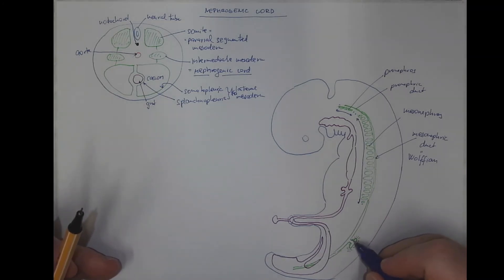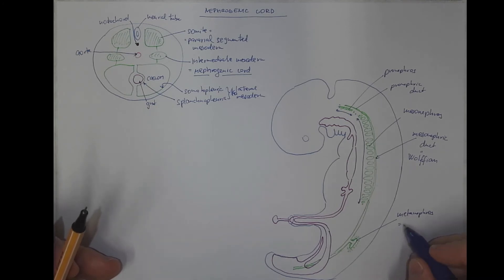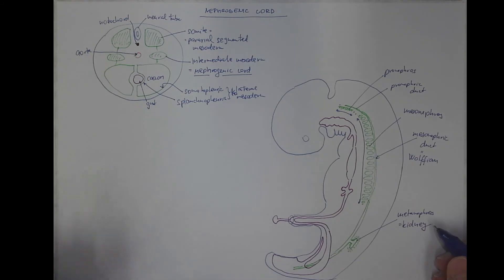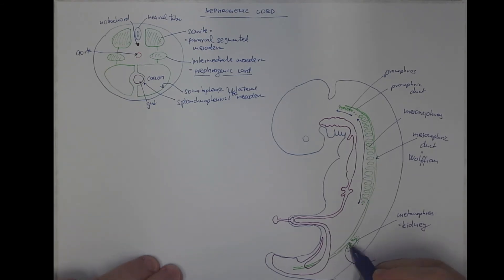And this will be the metanephros, also known as the final form of kidney. It's made of two components, the ureteric bud.